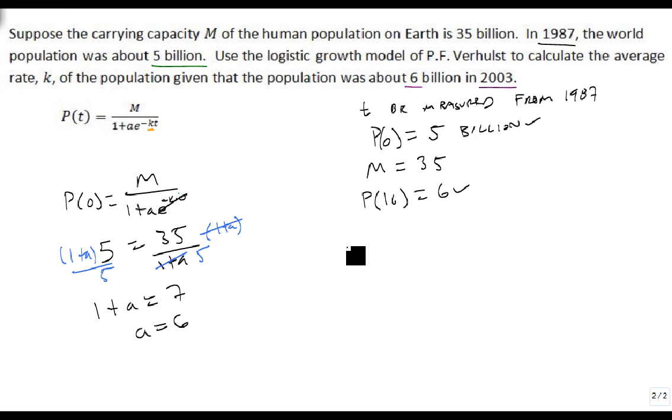So, P of 16 is equal to our M, which is 35, over 1 plus A, which is 6, times E raised to the minus 16K. I'm just going to put my variable on the end. And I also know that P of 16 is 6.